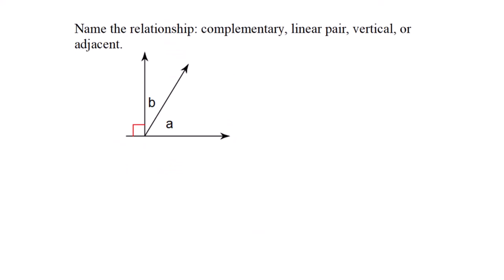This is a vocabulary question about angle relationships: complementary, linear pair, vertical, or adjacent. We have two angles A and B right next to each other, and on the other side is a right angle, 90 degrees. That means A and B together must add up to 90 degrees. These two are complementary.